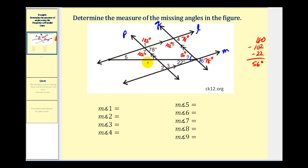Taking a look at angle two and angle seven — those are same-side or consecutive interior angles, which must be supplementary. So if angle seven is one hundred two degrees, angle two must be seventy-eight degrees. Then angle two and angle three form a linear pair, so angle three would be one hundred two degrees.